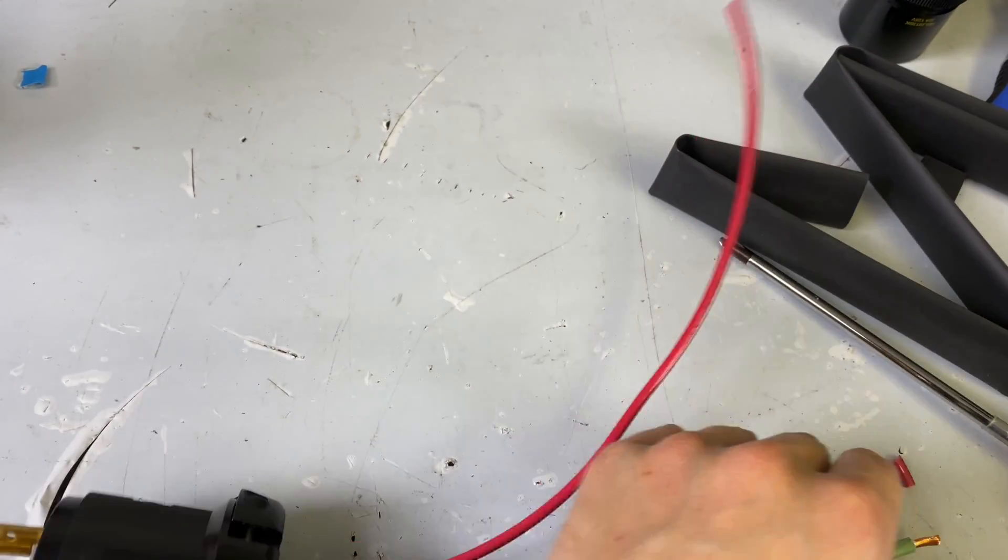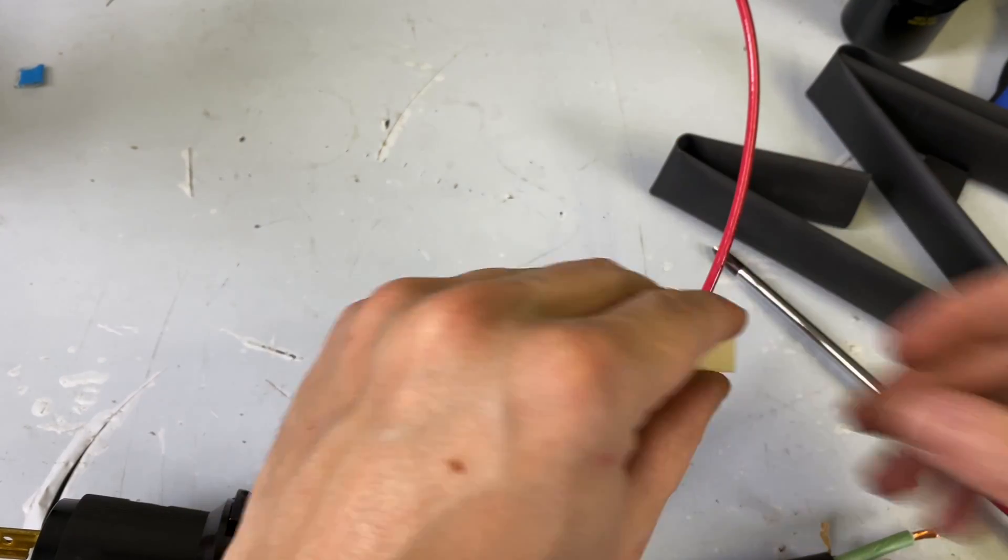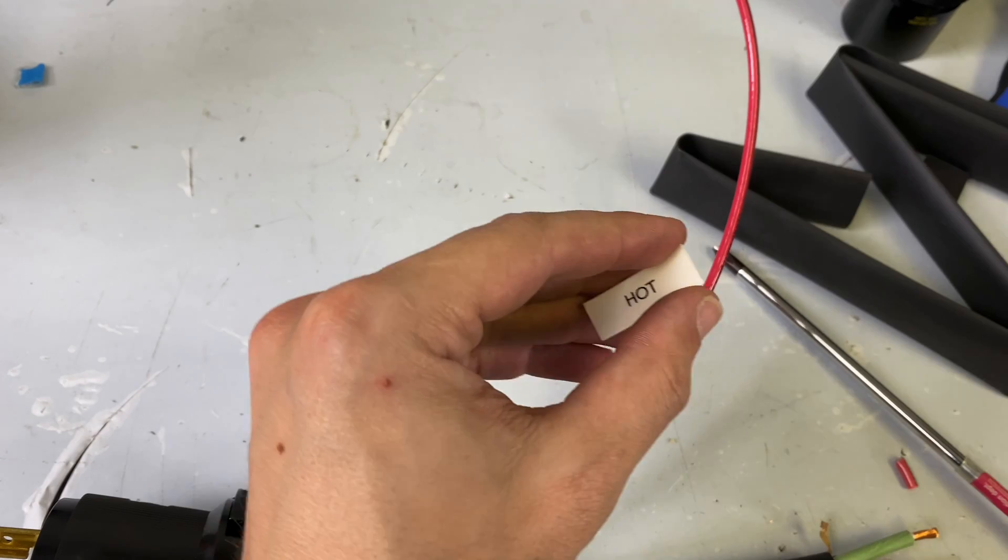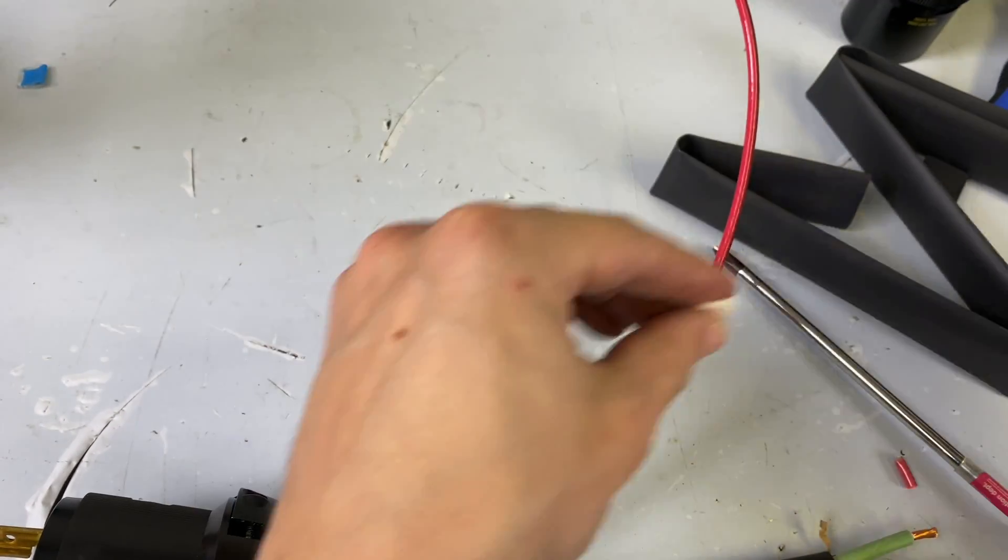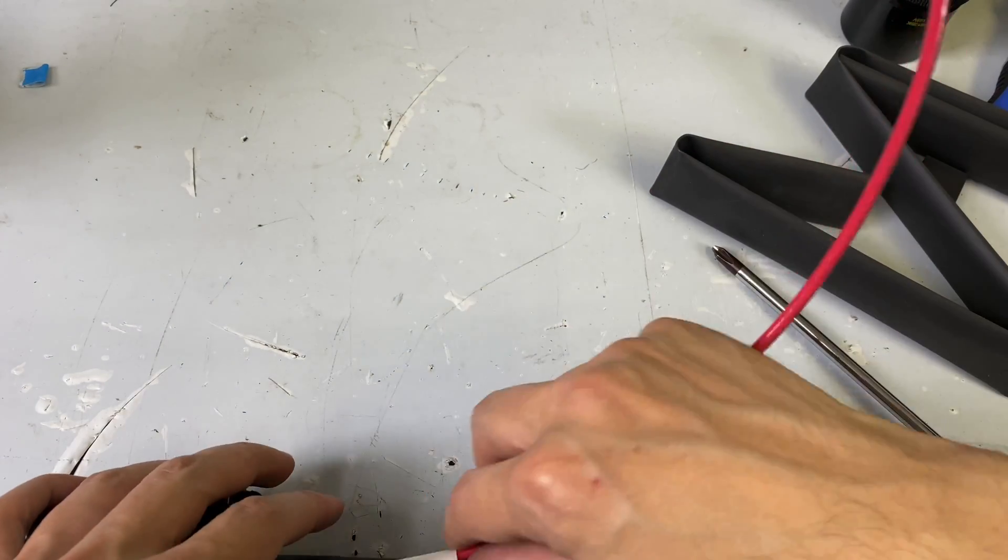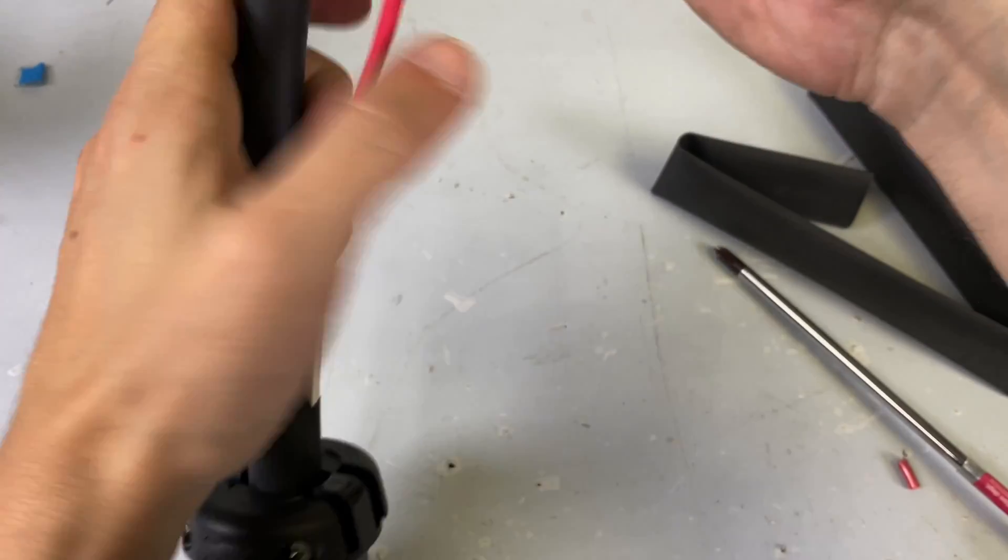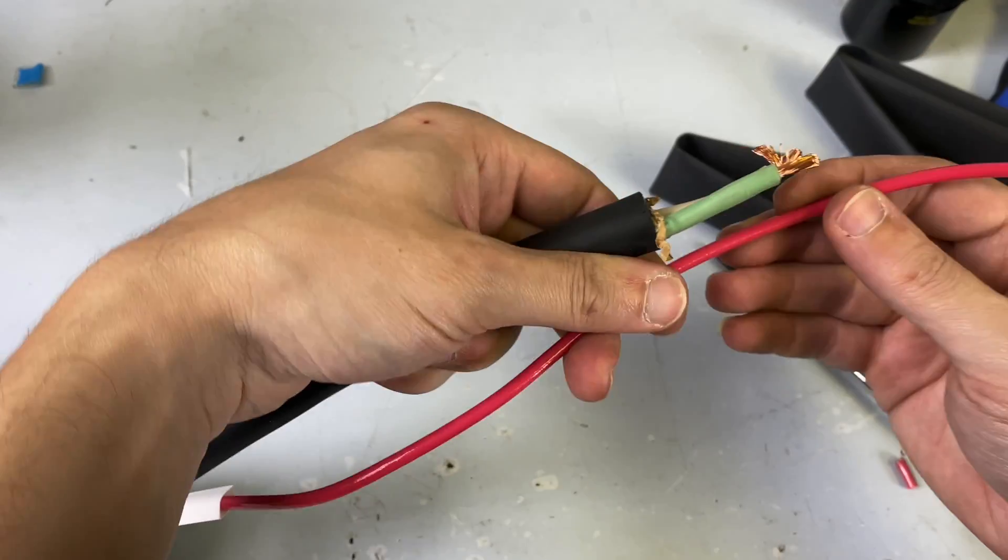So I did make myself a little heat shrink label that just says, ooh, it's a big reveal. Hot. Just like that. So that we can know what this, if an objective third party is.